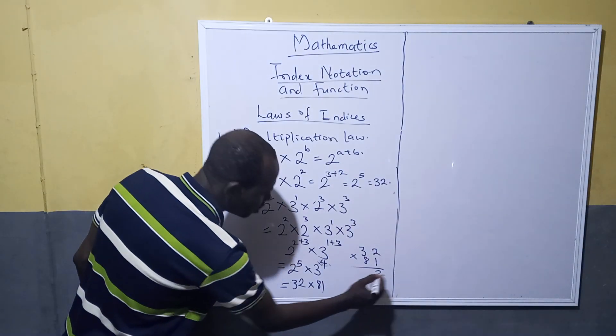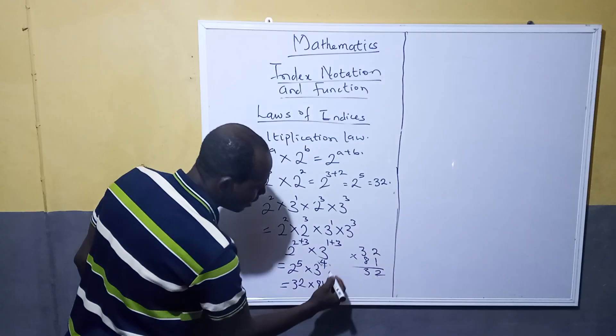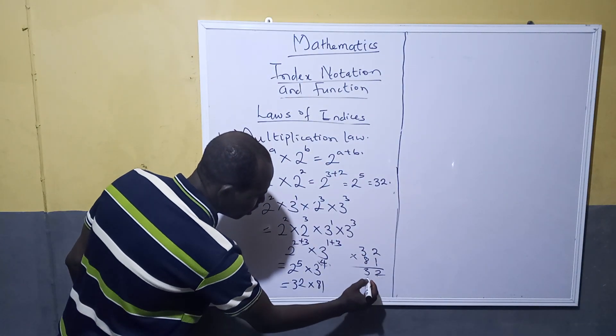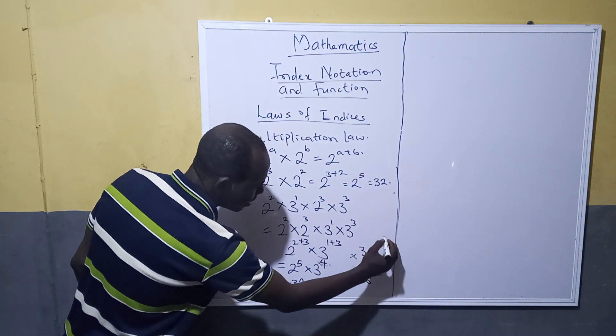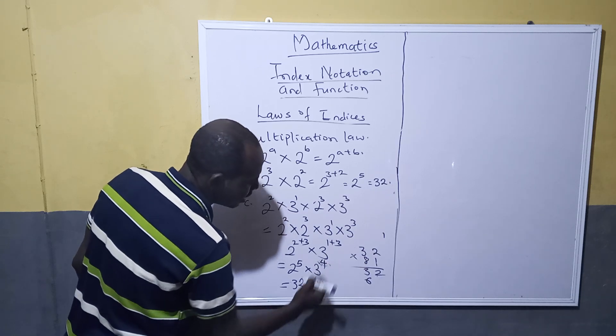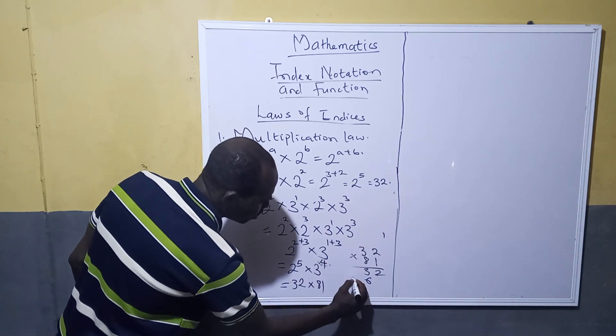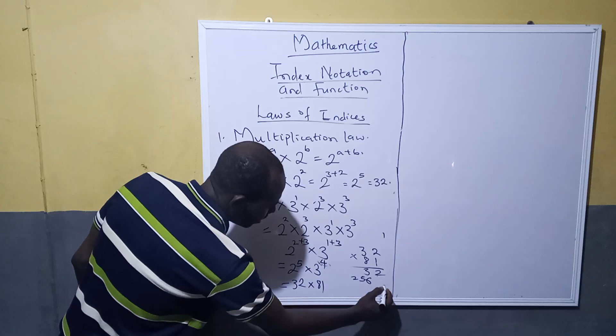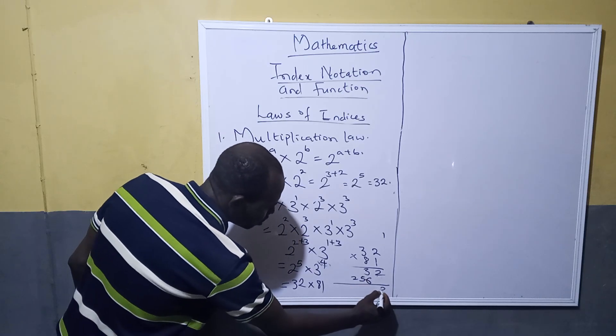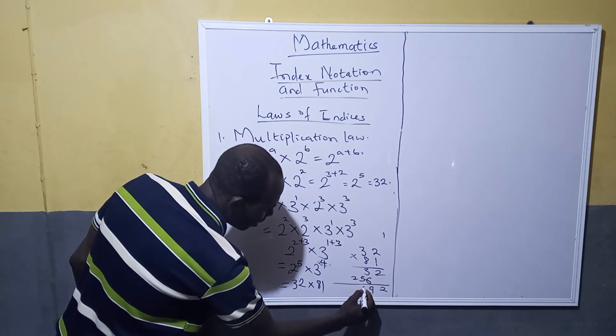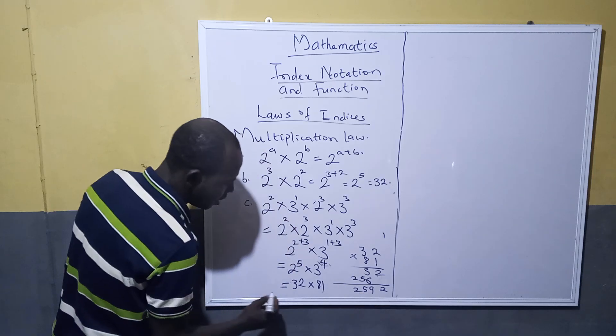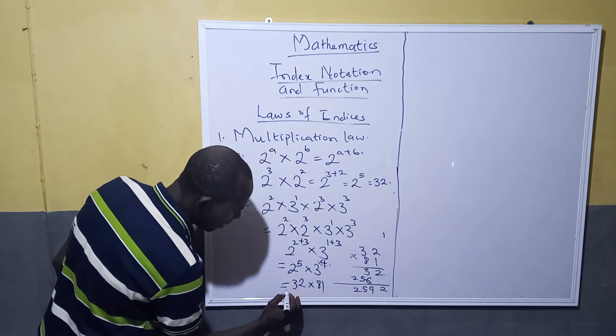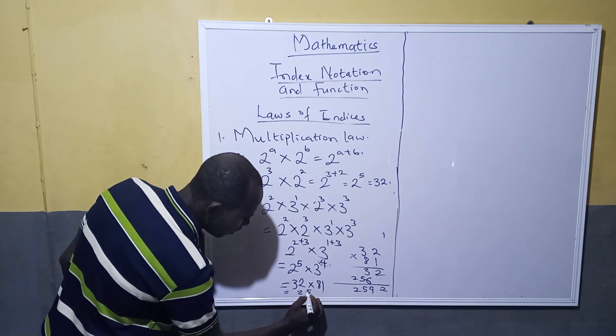From here you can do 1 multiplied by 2 is 2, 1 multiplied by 3 is 3, come here 8 multiplied by 2 is 16 plus carry 1, 8 multiplied by 3 is 24 plus 1 is 25. Then you have 2952, so your answer is simply 2952.